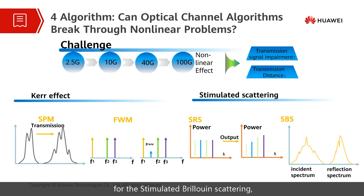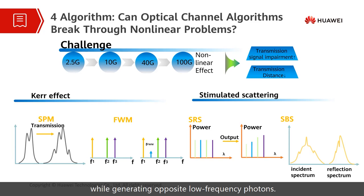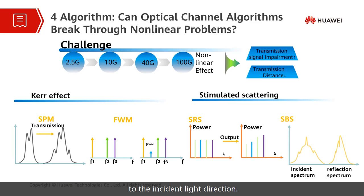For stimulated Brillouin scattering, incident light interacts with the transmission medium and produces acoustic flow through electrostriction, while generating opposite low-frequency photons. This is characterized by an increase in optical power in the direction opposite to the incident light.